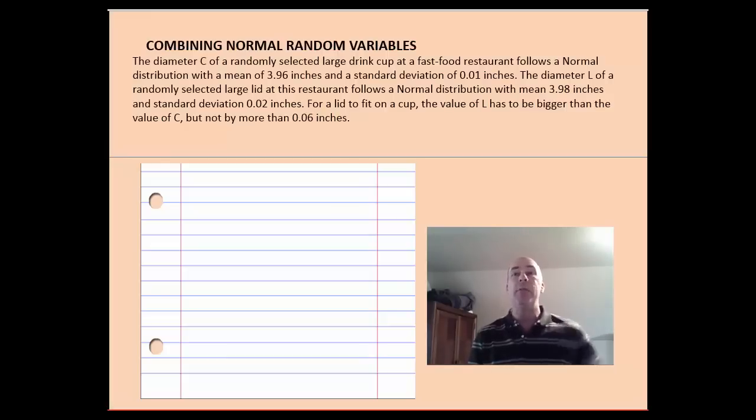And we want those lids to fit on the cups. The value l has to be bigger than the value of c. The lids have to be bigger than cups. But we don't want them so big that the lids go falling off. So, it can't go by more than 0.06 inches. So, the lid can't be more than 0.06 inches bigger than the cup is.